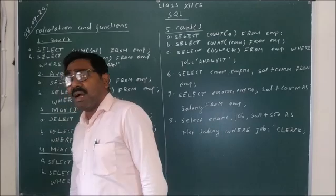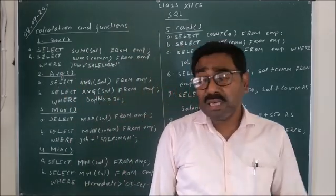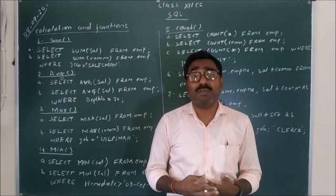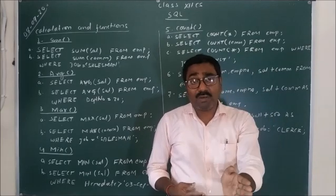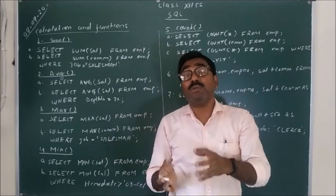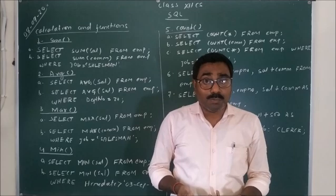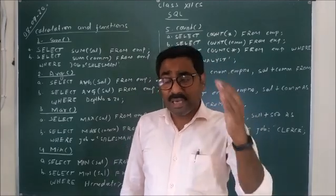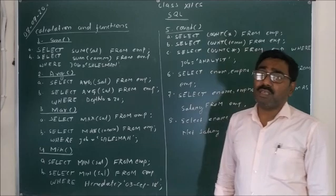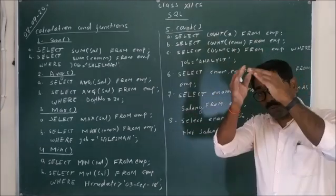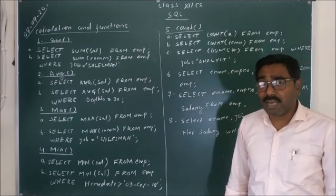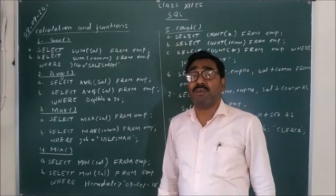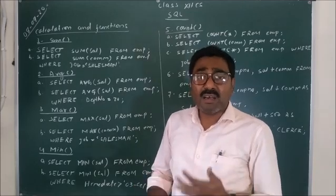Then there are two more functions: MAX and MIN. The MAX function is used to find out the maximum value — that is, the highest value — stored in each row of a particular column. The MIN function is used to find out the lowest value stored in a particular column. You can use both with or without a condition. Without a condition, it applies to all rows; with a condition, it applies to a particular category or limited set of rows.